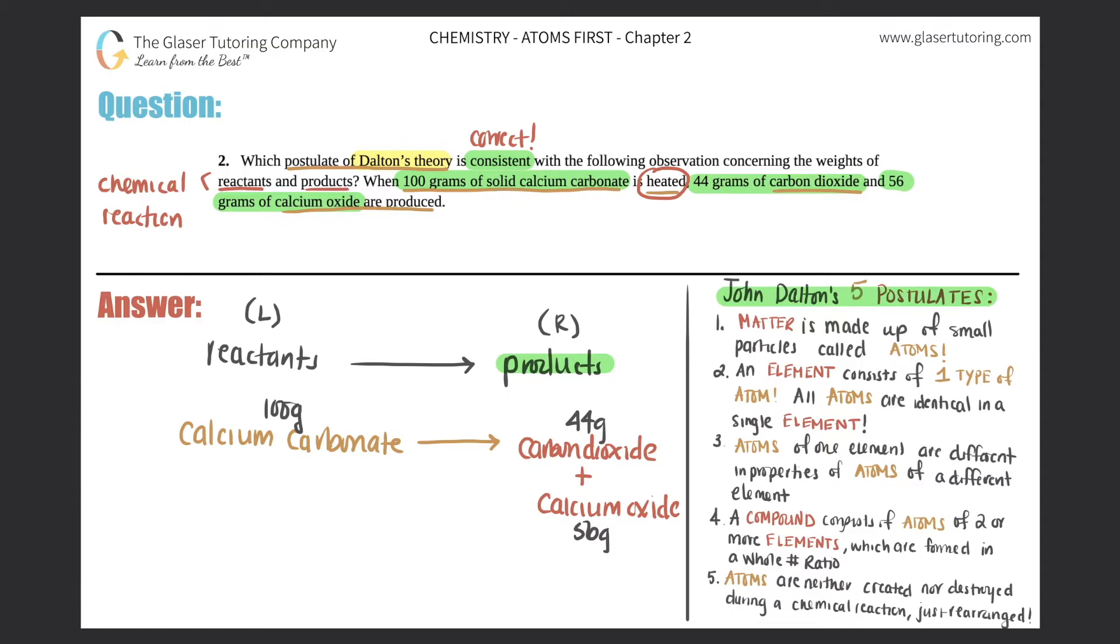Well, we should know that whatever the masses on the left-hand side has to be equal to the mass of the right-hand side because atoms cannot be created nor destroyed and atoms have matter. So I have a total of 100 grams here.